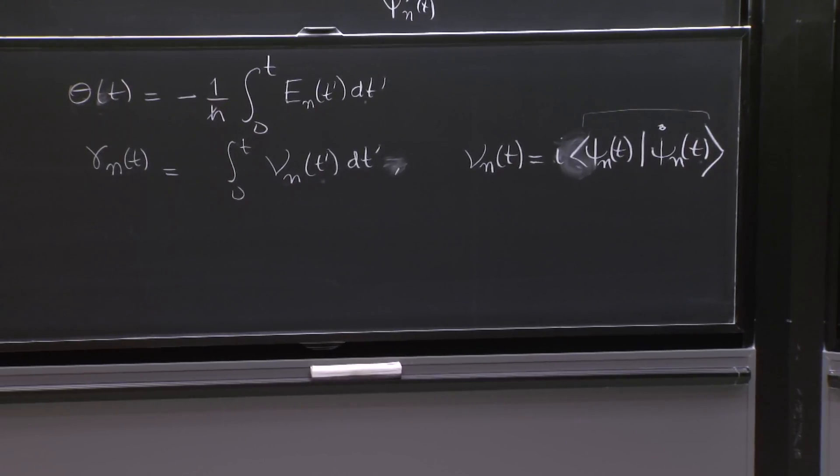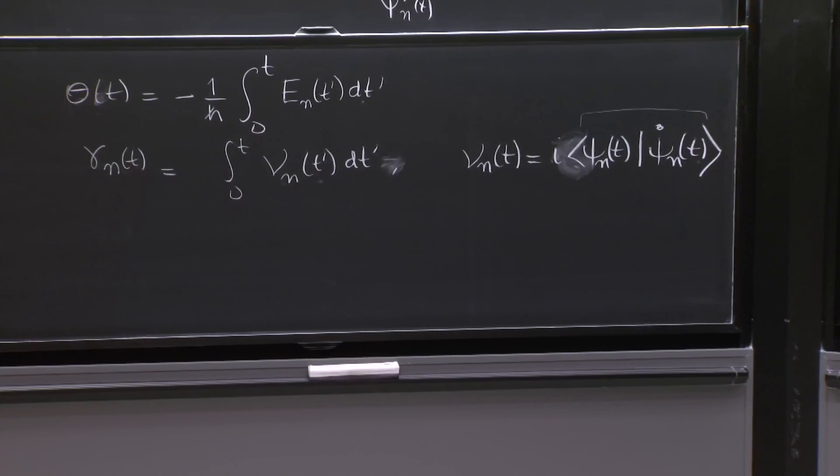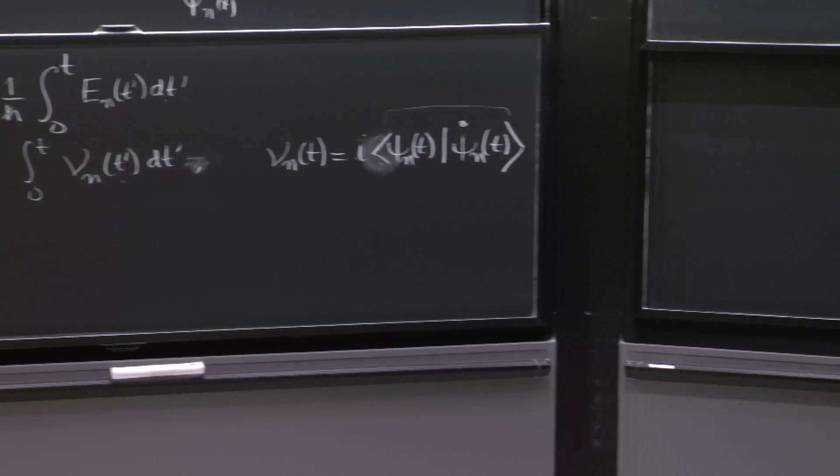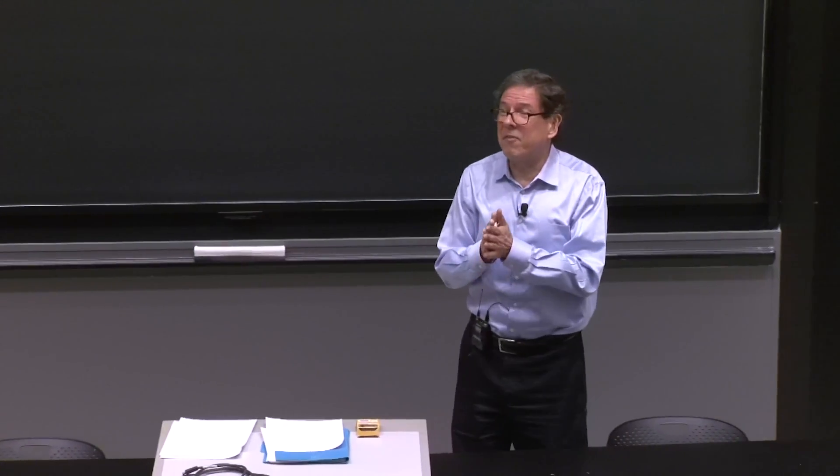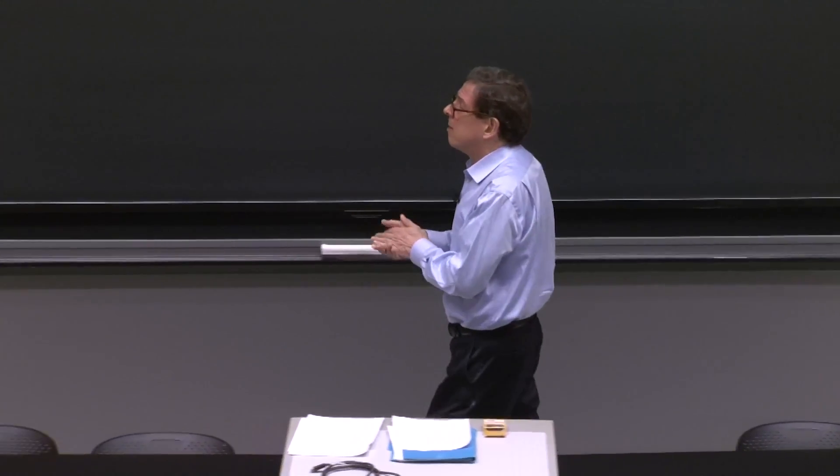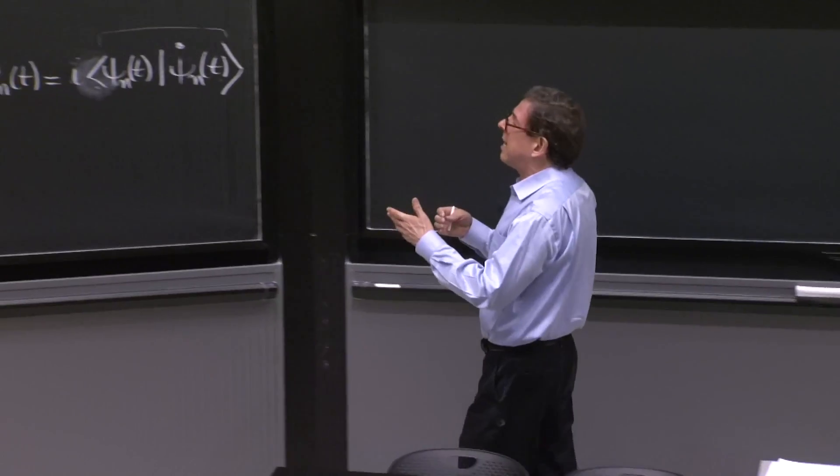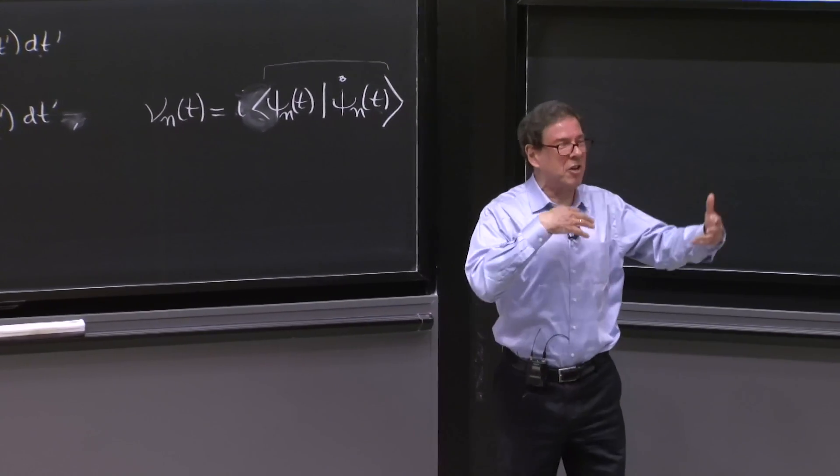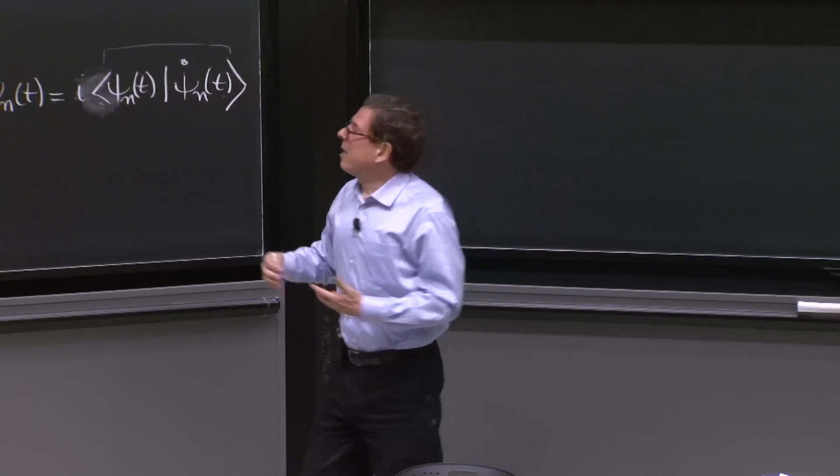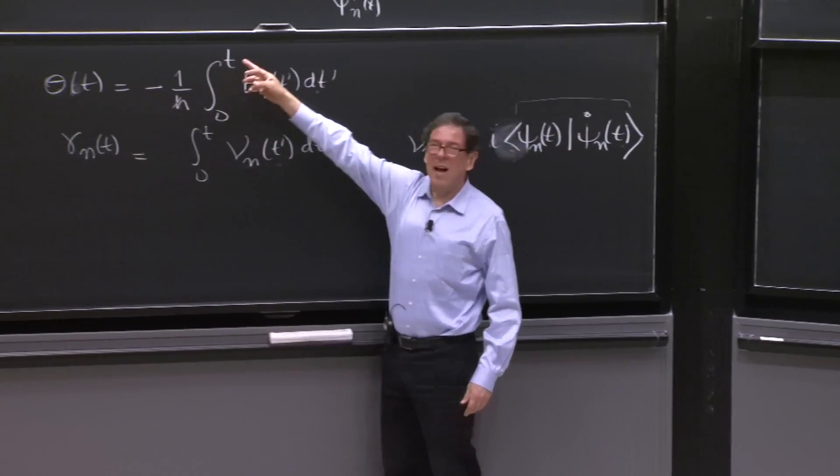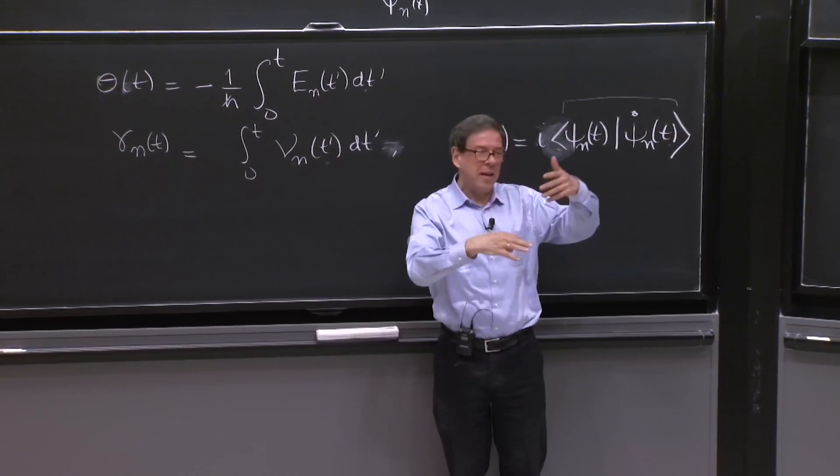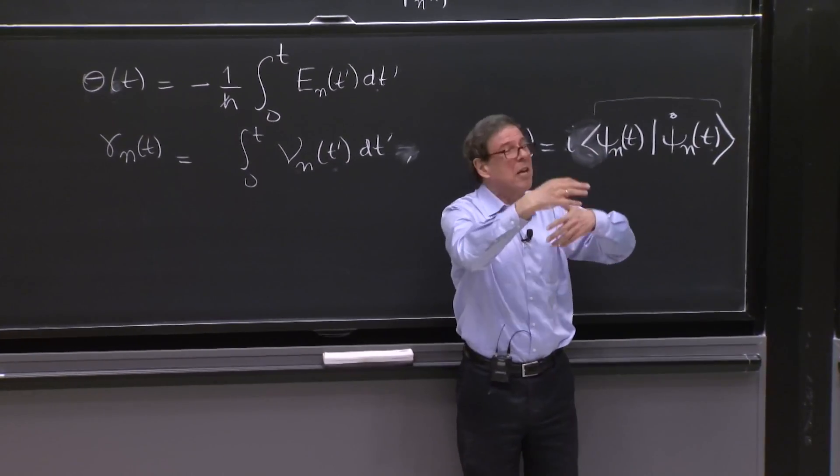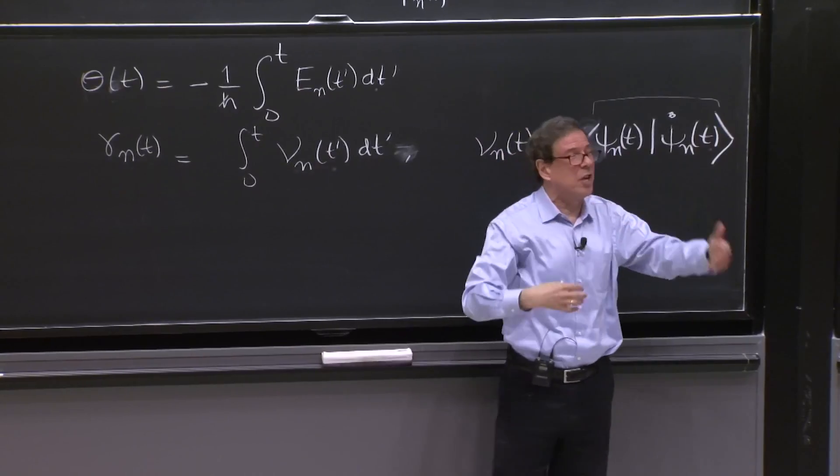And it's geometrical because of one reason that we're going to show that makes it quite surprising and quite different from the phase theta. The phase theta is a little like a clock, because it runs with time. The more time you wait on an energy eigenstate, the more this phase changes.